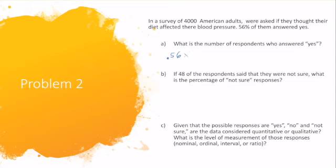Now if 48 of respondents were not sure, what is the percentage of not sure responses? So I had 48 out of my sample size, which is 4,000. That gives me 0.012 or 1.2%.